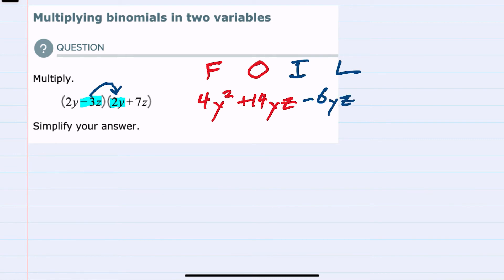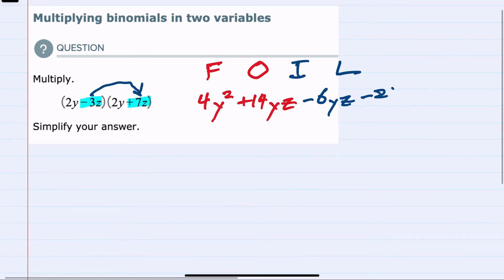And then we're left with the last, which means we're taking the last part of the binomial in each expression and multiplying here. We have minus 3 times 7 minus 21. And z times z is z squared.